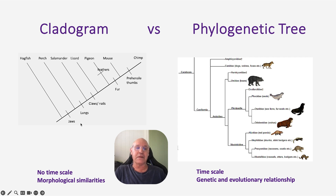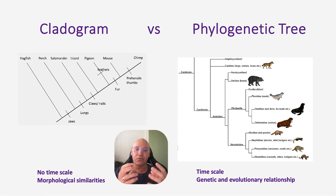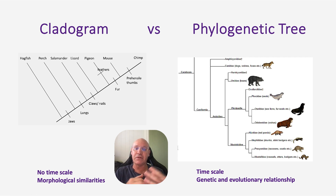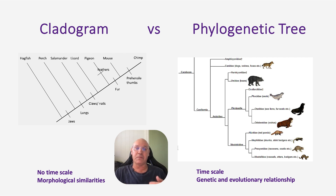Another difference is that a cladogram looks at shared derived characteristics that are primarily morphological — physical similarities. Whereas the phylogenetic tree focuses on genetic and evolutionary relationships, making it more specific because it looks at similarities in the genetics. This syllabus objective is about interpreting these diagrams.